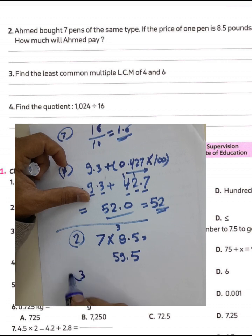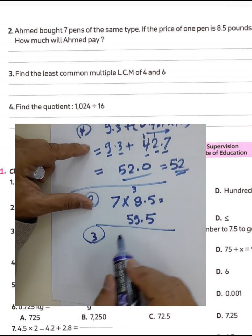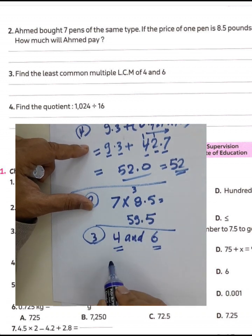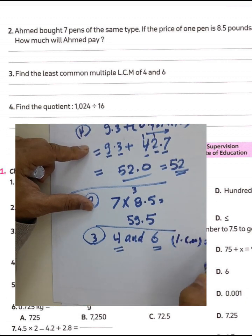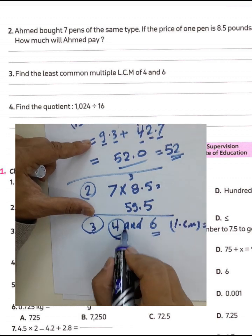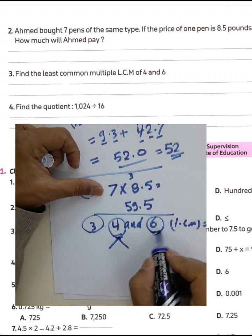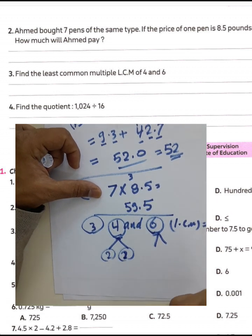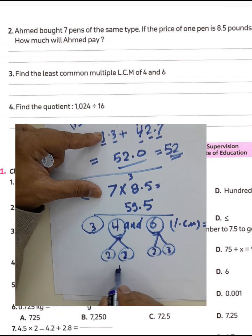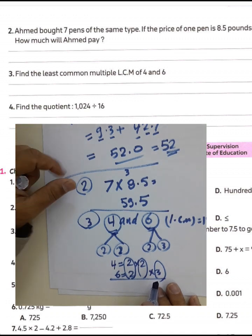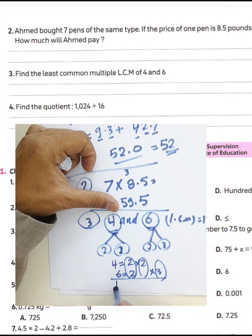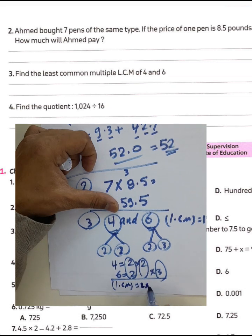Question number three: find the least common multiple of 4 and 6. We know 6 cannot be divided by 4, so 6 plus 6 equals 12, and 12 can be divided by 4. So the LCM equals 12. We can also solve this by factorizing: 4 equals 2 times 2, and 6 equals 2 times 3. Using Venn diagram circles, we choose one 2 from the common part, then multiply: 2 times 2 times 3 equals 4 times 3 equals 12.